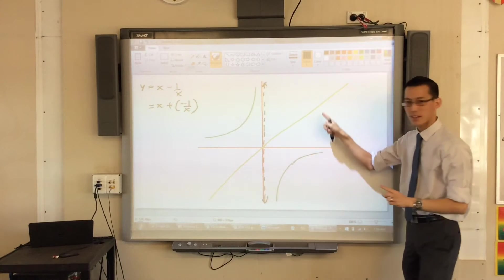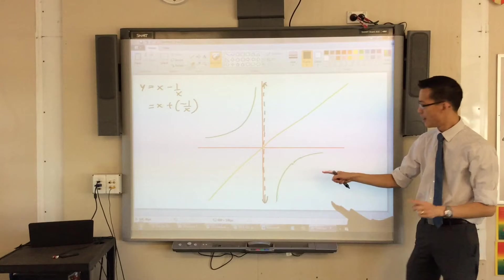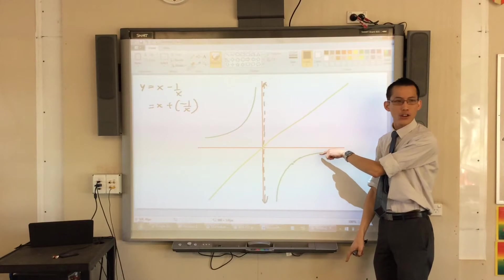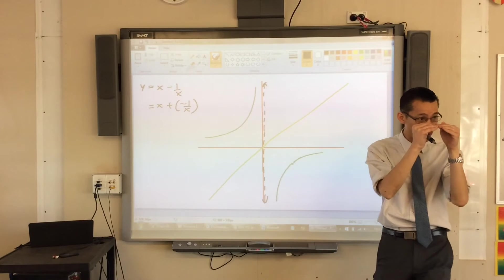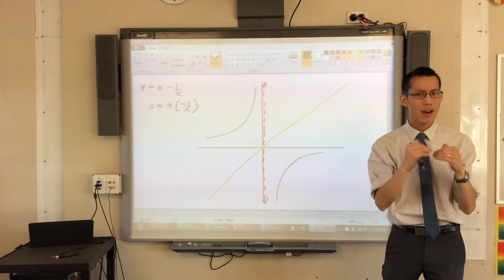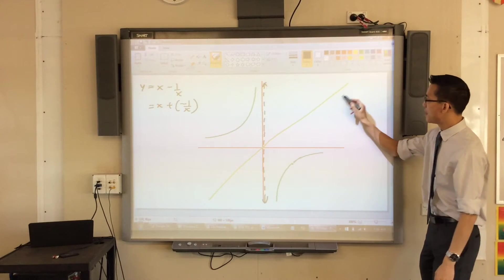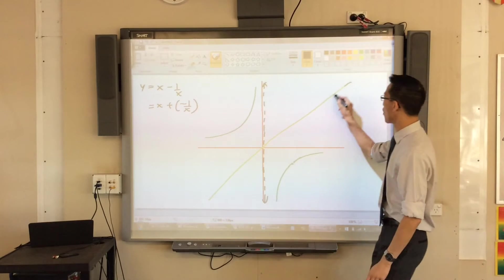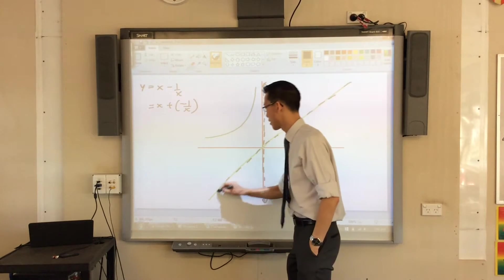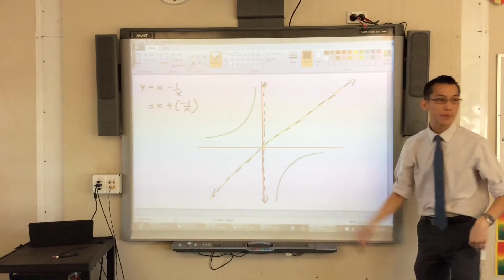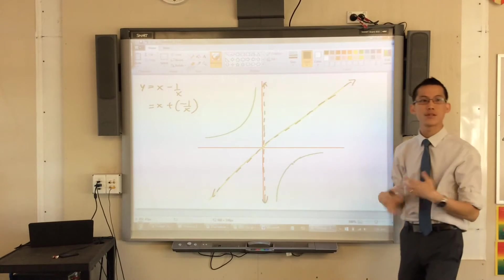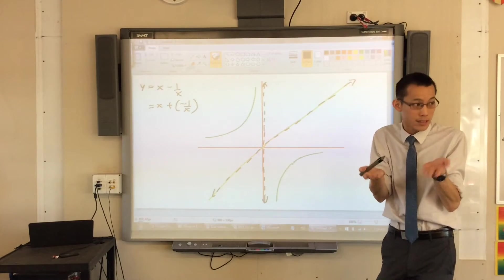So when I add this on, I don't go higher, I go just a little bit lower. Does that make sense? If I'm adding a negative thing, I'm going to be underneath here. Therefore, I'm going to be approaching this y equals x asymptote. At least on the right-hand side, I'm going to be approaching it from beneath. That's the first thing I know.